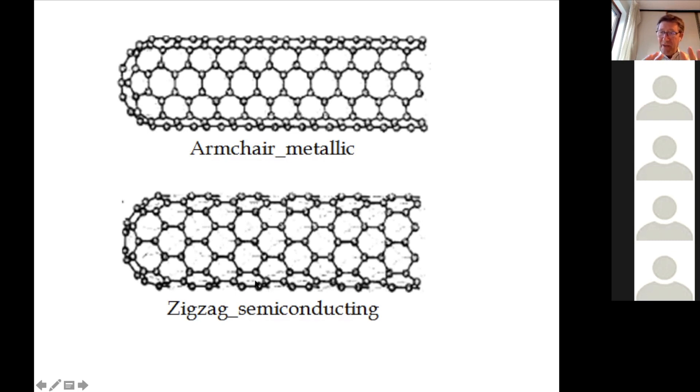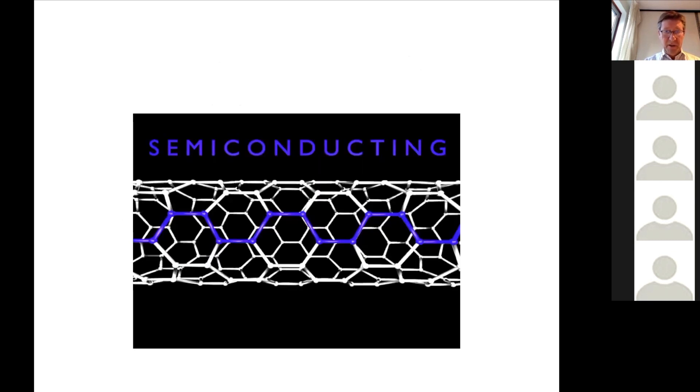So the way that the graphene rings are wrapped in the carbon nanotubes influences the properties of the carbon nanotube itself. So we have metallic and semiconductor. This is the semiconducting carbon nanotube.